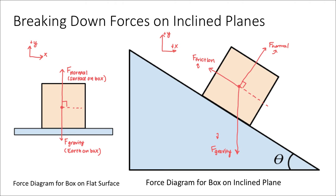That also means the box would be accelerating in both the x and y directions. To make everything a lot easier, when we deal with inclined planes we're actually going to tilt our coordinate system so that the x direction is parallel to the hill and the y direction is perpendicular to the hill. I'll just take my coordinate system and rotate it like so. Now I'm calling movement down the hill the positive x direction, and the direction perpendicular to the hill the y direction. Now the force of friction is in the x direction, and the normal force is in the y direction.